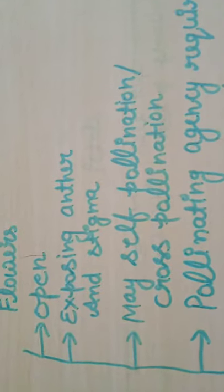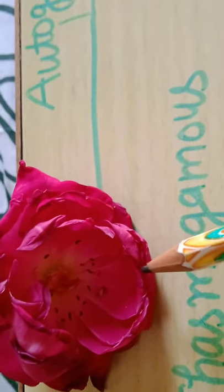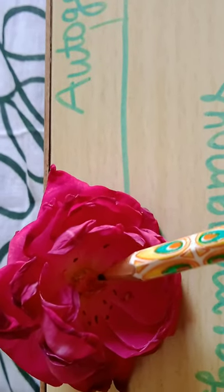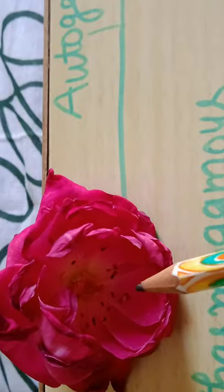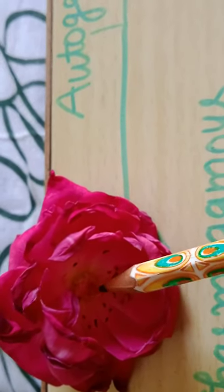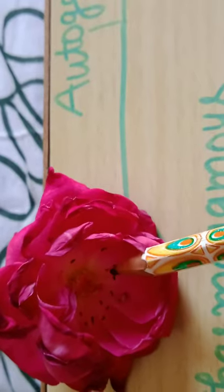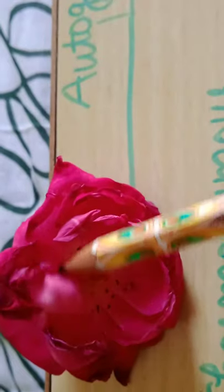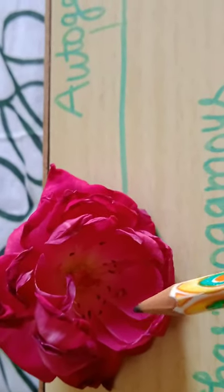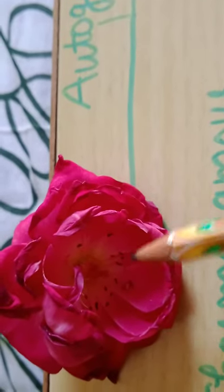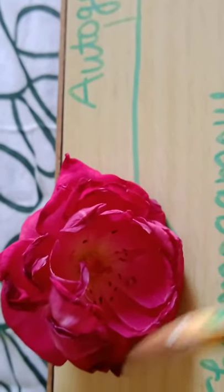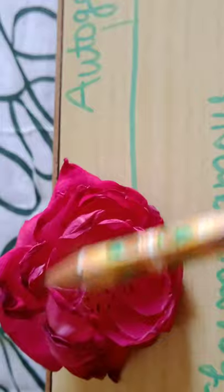Looking again at the rose flower as our example: first, it is an open flower. Second, the anther and stigma are exposed. So there are chances that the pollen will stick to the stigma for self-pollination, but there are also chances of cross-pollination because the flower is open. When there is cross-pollination, a pollinating agent is required. These flowers are prominent and more colorful.